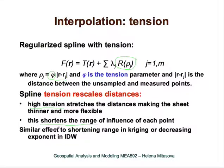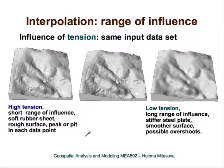You can get similar effects by tuning the range of influence in Kriging — by selecting the properties of your model variogram — or by decreasing the exponent in inverse distance. Almost all methods have some way of tuning the range of influence, including Kriging, inverse distance, spline, and multi-quadrics. This then influences the resulting shape of the surface.